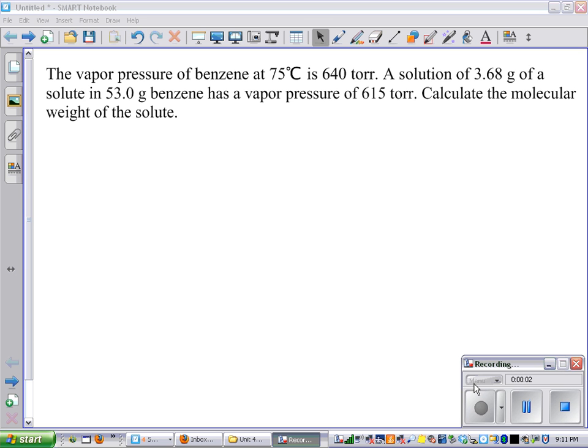We're going to use Raoult's law. The vapor pressure of benzene at 25 degrees Celsius is 640 torr. A solution of 3.68 grams of a solute in 53.0 grams of benzene has a vapor pressure of 615 torr. Calculate the molecular weight of the solute.